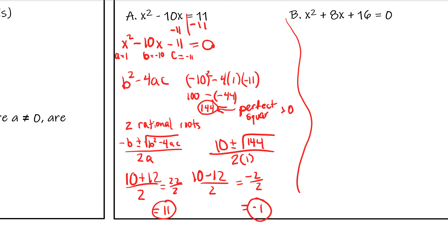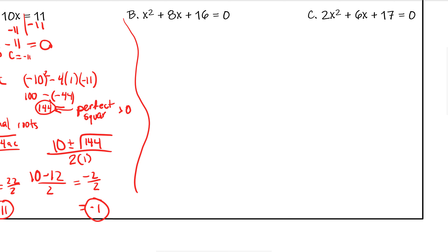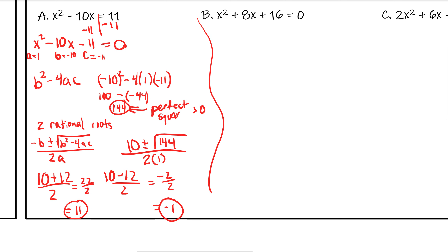Example A ended up working out nicely, so we have two real, nice answers: x equals 11 and x equals negative 1. It's not always going to be the case for our answers, but that's what happens when you have numbers that allow a clean result. Let's try example B. We're going to start by doing our discriminant.